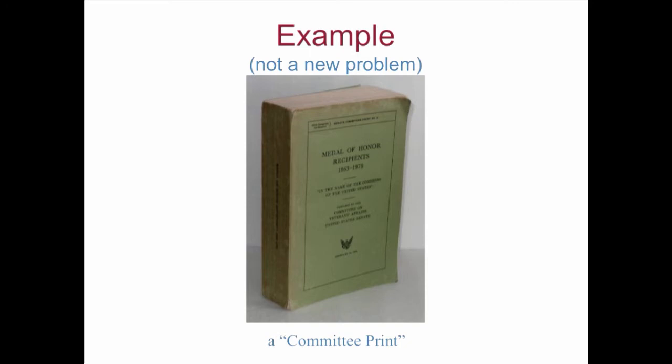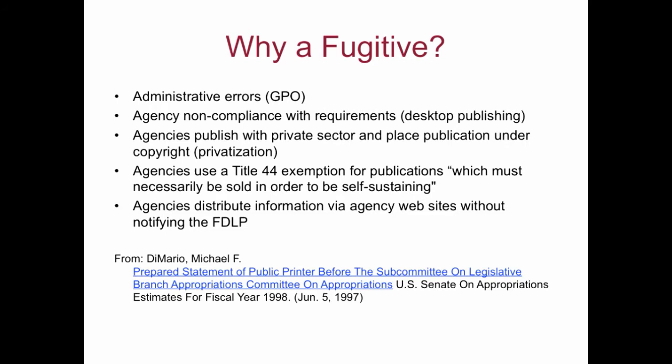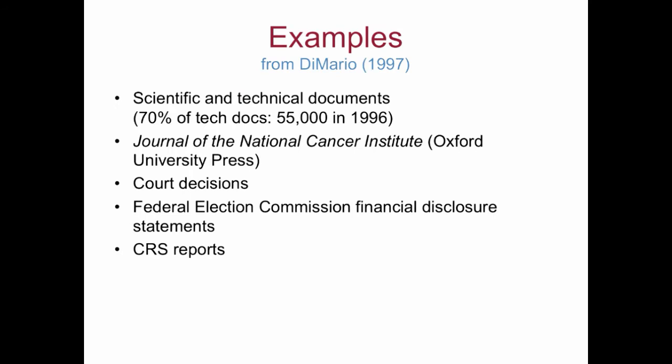Why do things become fugitive? There are many reasons. Here are some that Public Printer Michael DeMario enumerated 17 years ago. Notice that even then, in 1997 — five years after the first web browser — digital distribution by agencies was already high on the list of reasons that things became fugitive. Also noted is that GPO's official purview is limited by the Paperwork Reduction Act and by Office of Management and Budget directives that allow executive agencies to avoid complying with even the limited scope of Title 44. So there are loopholes that get things out of the system.